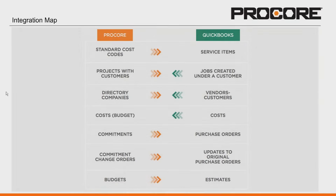Today I'll be walking through the Procore and QuickBooks integration. To start, I'd like to go through the integration map. These are the items that can be synced between your project management system in Procore over to your accounting system in QuickBooks. The arrows pushing from Procore over to QuickBooks are being created in your PM system and then syncing via our ERP integrations tab at the company level over to QuickBooks. The items with the green arrow are being created in QuickBooks and being pushed over to Procore.